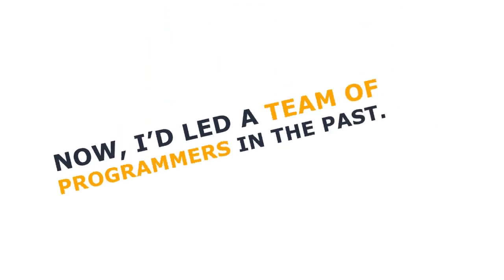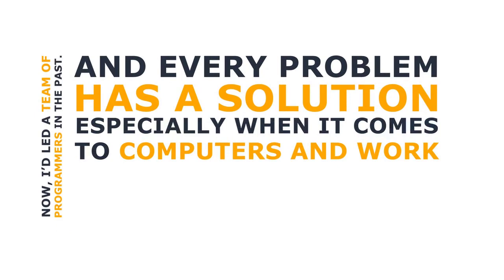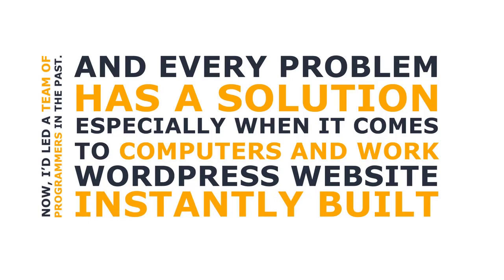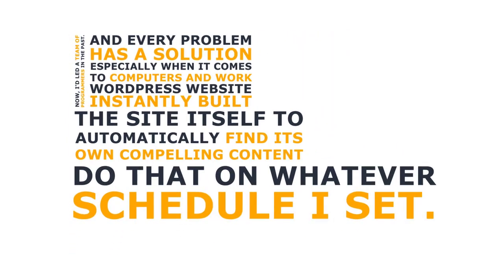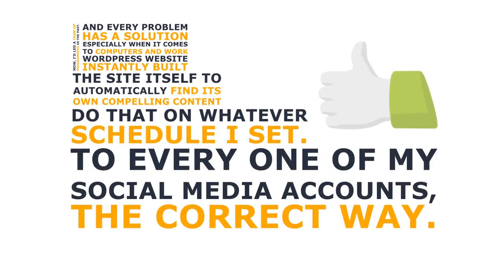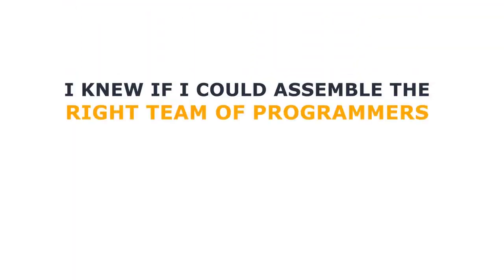I'd led a team of programmers in the past, and every problem has a solution, especially when it comes to computers and work. So I started thinking about the ideal situation. I wanted to basically snap my fingers and have a full WordPress website instantly built on a domain name, all configured with the right theme and plugins. Then I wanted the site to automatically find its own compelling content, excerpt and post it in the proper format with a correct citation, on whatever schedule I set. Finally, I wanted it to automatically share each article to all my social media accounts the correct way. I knew if I could assemble the right team of programmers, they could write an app so I just had to specify the domain name, the site title, and the subject niche.